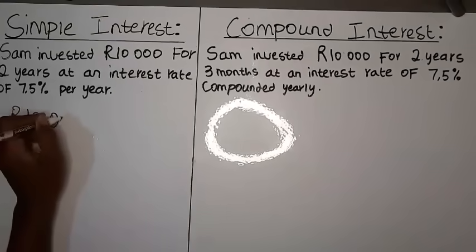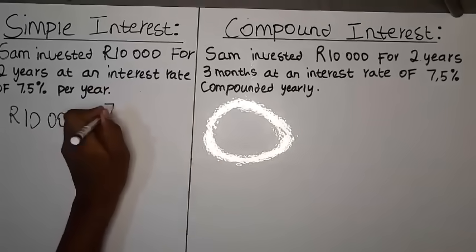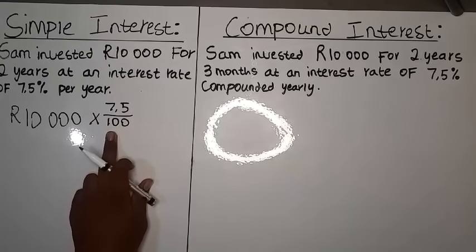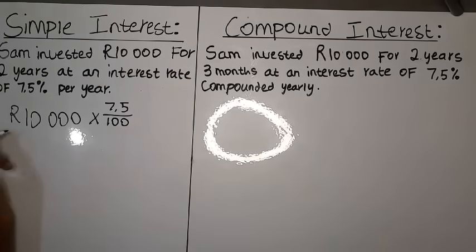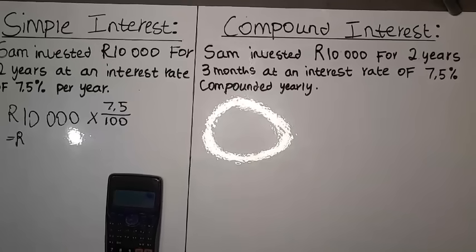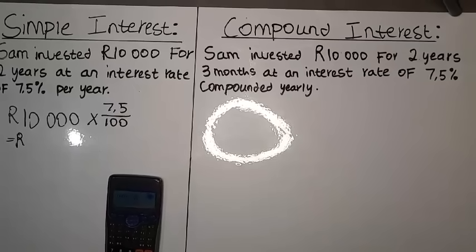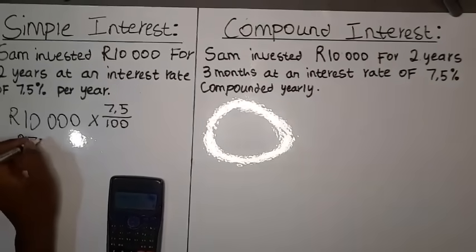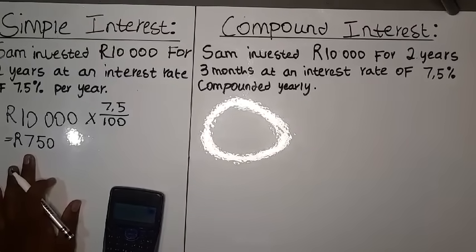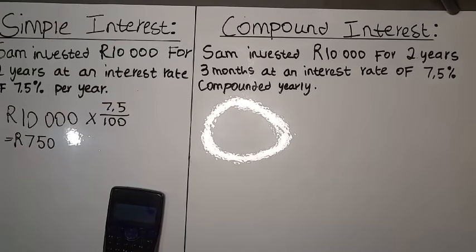You're going to take 10,000 — which is the amount Sam invested — and multiply by 7.5 over 100, since 7.5 over 100 is just 7.5 percent. When you hit that on your calculator, 10,000 multiplied by 7.5 over 100 gives us 750 grants. This is the amount of interest Sam gets for his investment of 10,000 grants, but only for a single year.